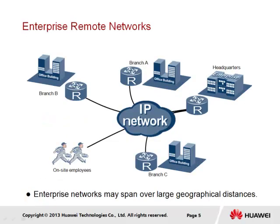The IP network can be understood to represent the standard for network communication in the world today. Enterprise networks require solutions for supporting communication over large geographical distances between remote offices, in the form of HQ and branch offices, and also other remote locations.